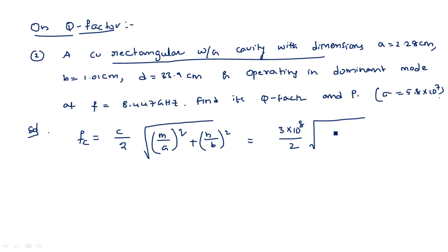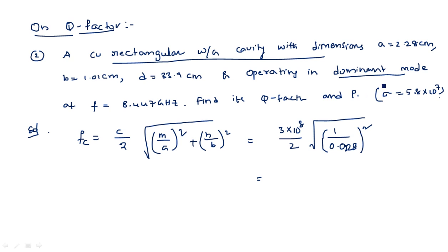For a rectangular cavity resonator, the dominant mode is TE10. So m = 1, n = 0, and we use m/a = 1/0.0228. After substituting C = 3 × 10⁸ m/s and simplifying, the cutoff frequency f_c = 6.57 GHz.